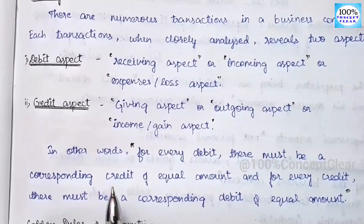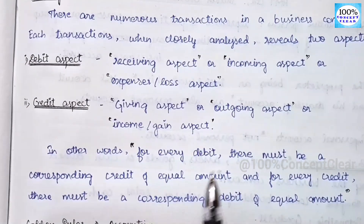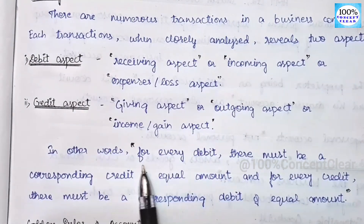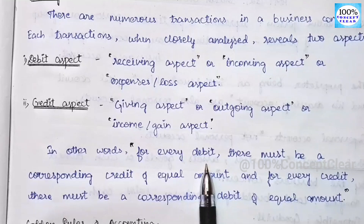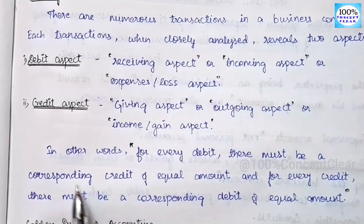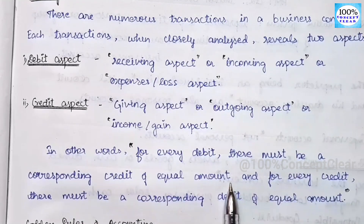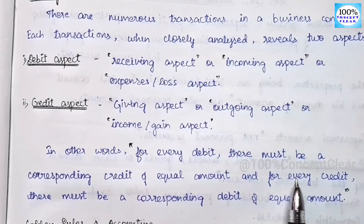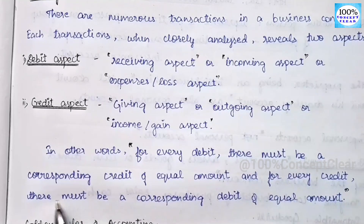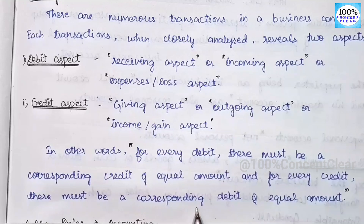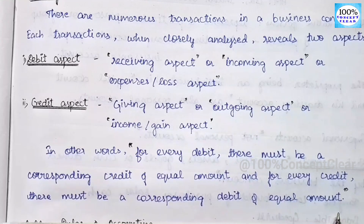In other words, if we are clear: for every debit, there must be a corresponding credit of equal amount. And for every credit, there must be a corresponding debit of equal amount. So we have a rule.